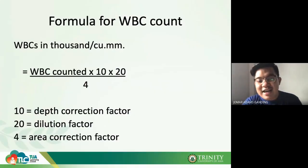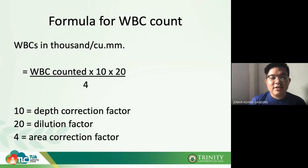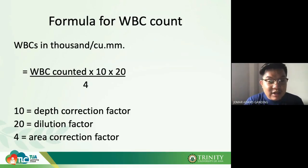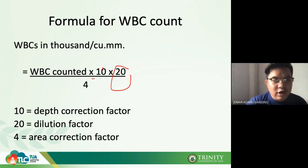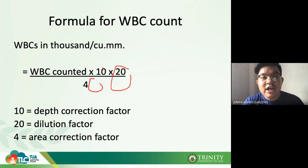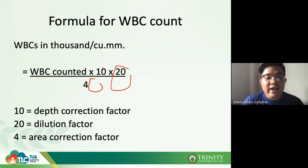For the WBC count formula, it is almost the same: WBC counted on the 4 large outer squares × 10 (depth correction) × 20 (dilution factor), all over 4 (area correction factor). Unlike the RBC formula where we multiply by the area correction factor, for WBC we divide by 4.